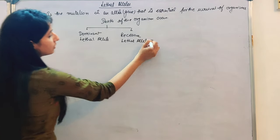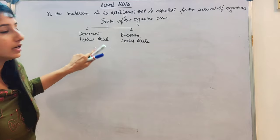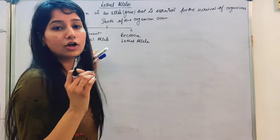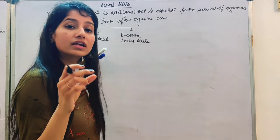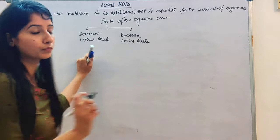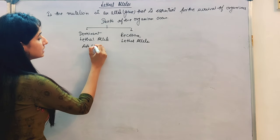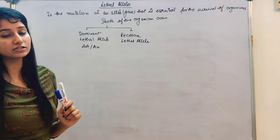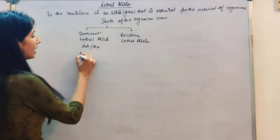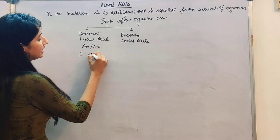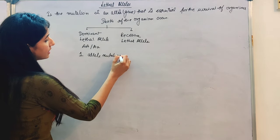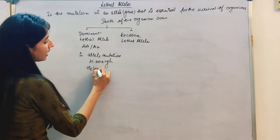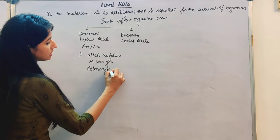In a dominant lethal allele, one allele is sufficient to cause the death of the organism. It can work in the heterozygous condition as well. If the mutation is a dominant lethal allele, then one allele mutation is enough. So it can also work in the heterozygous condition.